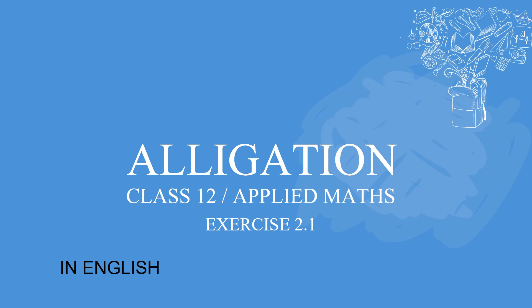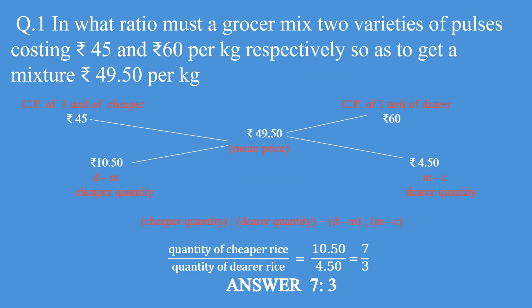Today we shall be talking about certain questions relating to allegation. We have already uploaded a video regarding the concept of allegation, and today we will go further with questions. The first question states: in what ratio must a grocer mix two varieties of pulses — one costing 45 and the other costing 60 per kg — so as to get a mixture at the rate of 49.50 per kg?